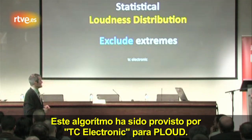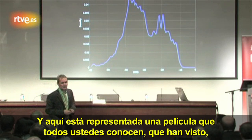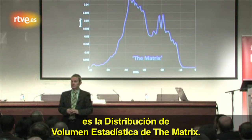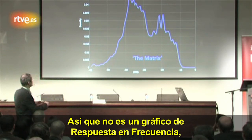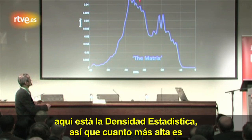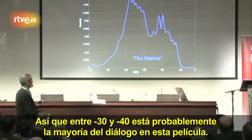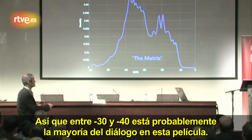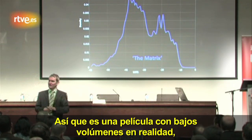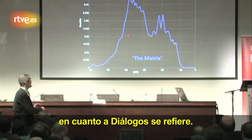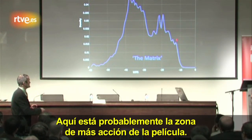This algorithm has been provided by TC Electronic to P-loud. Here is an example — a movie you all know, the Matrix. That's the statistical loudness distribution of the Matrix. It's not a frequency response graph — here is statistical density. The higher it is, the more levels at that value appear in the movie. Between minus 30 and minus 40, there is probably most of the dialogue — it's quite a low-level movie as far as dialogue is concerned. And here is probably more of the action type of scenes.